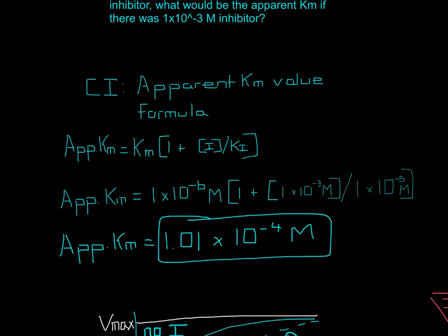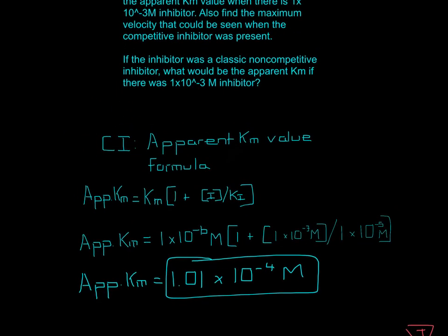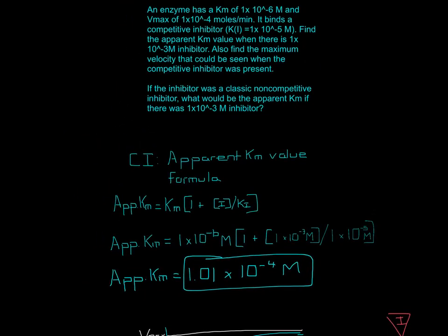Fill in all the information from the problem. Km is 1×10⁻⁶, so we put that in. The inhibitor concentration is 1×10⁻³, and the inhibitor constant Ki is 1×10⁻⁵. Plugging these in and multiplying through, we get 1.1×10⁻⁴ as the apparent Km.